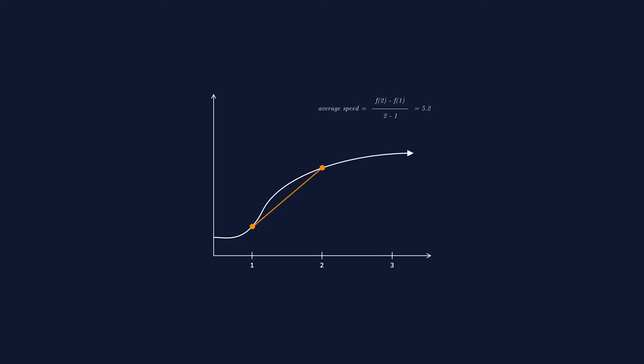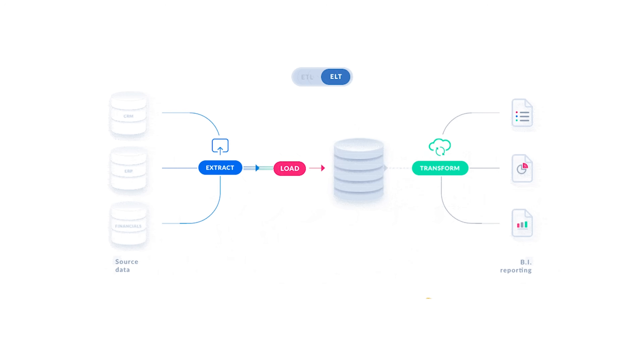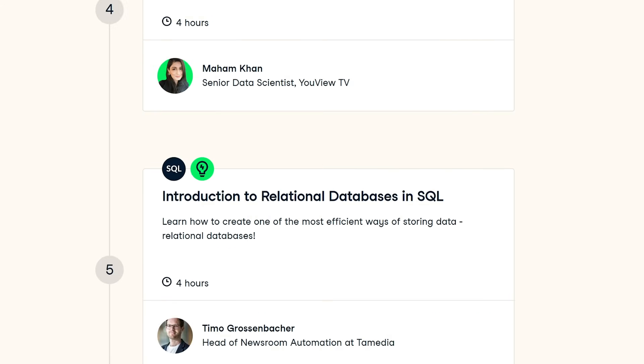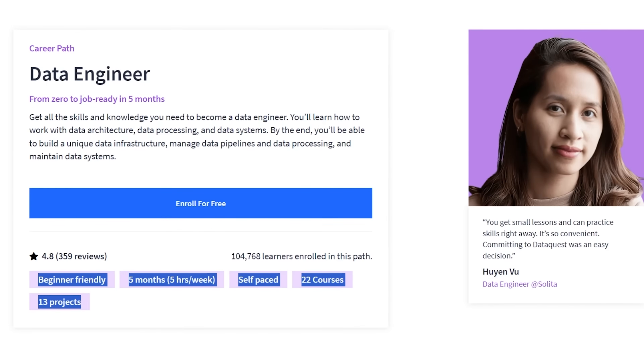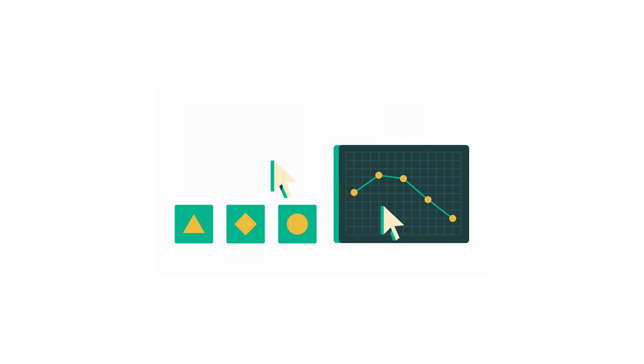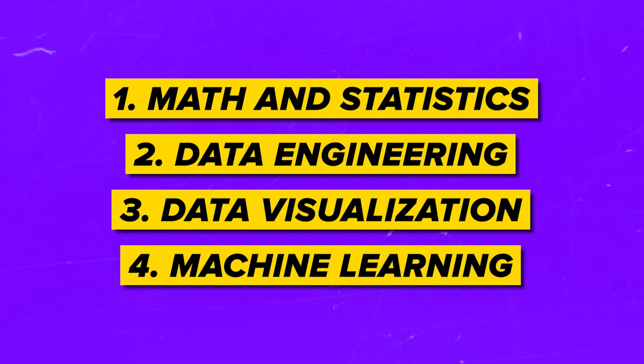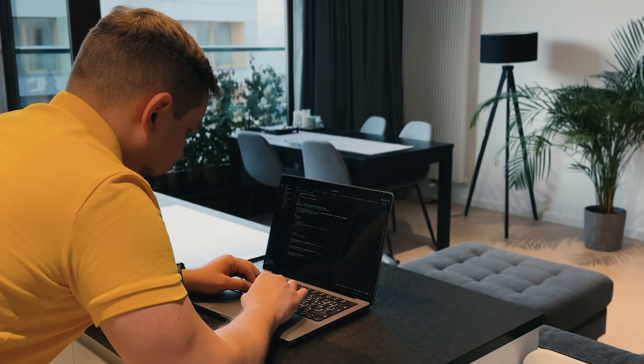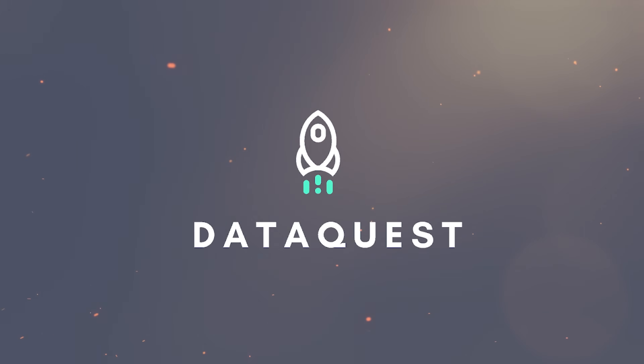Math and statistics: Both platforms cover all the math you need to reach intermediate level, but DataCamp wins here — it takes a slower approach that makes it easier to grasp tricky concepts. Data Engineering: Both platforms cover the entire ETL process, but when it comes to R and SQL, DataCamp shines brighter, and its Data Engineer career track is more comprehensive. Data Visualization: DataQuest sticks to basic graphs, while DataCamp goes the extra mile with more complex graph types. Machine Learning: Both cover common algorithms, but DataQuest stands out for its focused approach — tackling one algorithm at a time and providing guided projects, giving DataQuest the advantage here.